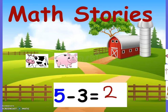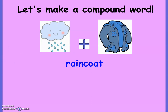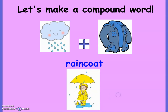We need to make a compound word. Remember, we put two words together to make a brand new word. Rain — coat. Raincoat. We just made the word raincoat! Some people wear a raincoat to keep the rain off of them. This little girl has a raincoat on, and she also has an umbrella and some rain boots too. Awesome work my friends.